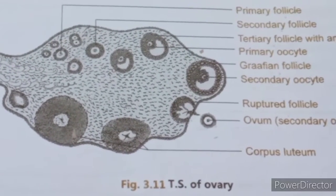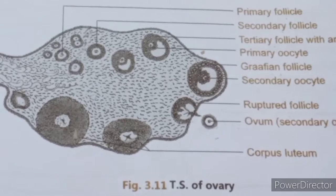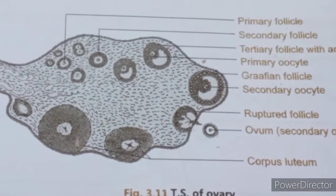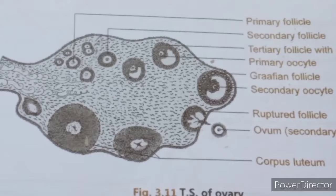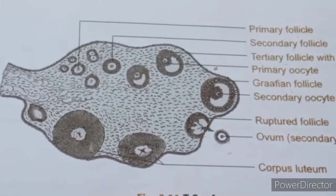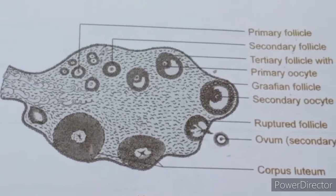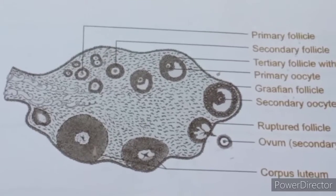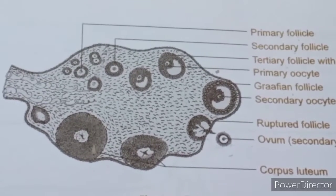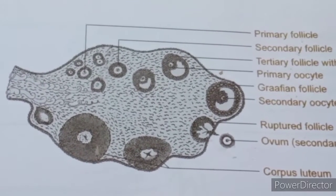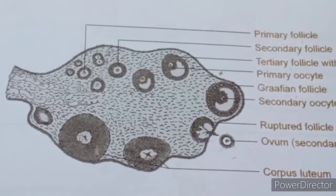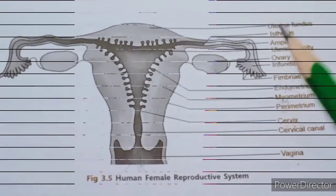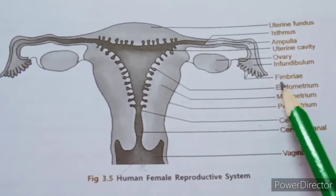Functions of the ovaries: the ovary secretes female hormones called estrogen and progesterone, which help in the formation and release of the egg or ovum. Estrogen regulates the menstrual cycle, plays a vital role in secondary sexual characters at puberty in females, and helps maintain pregnancy and keep bones strong.